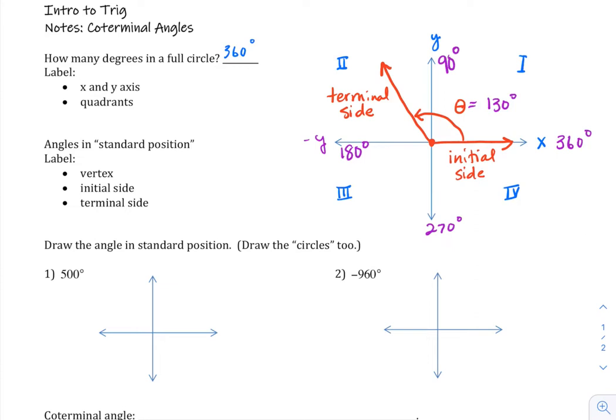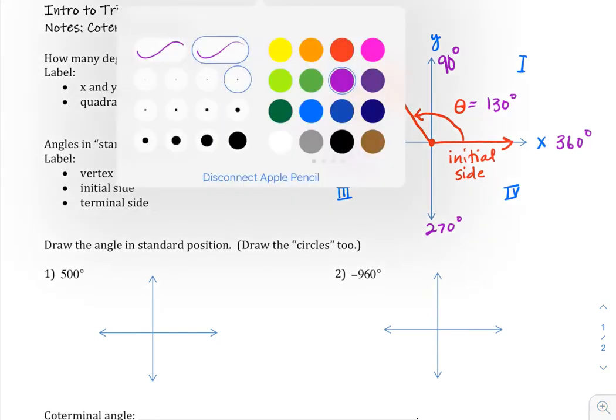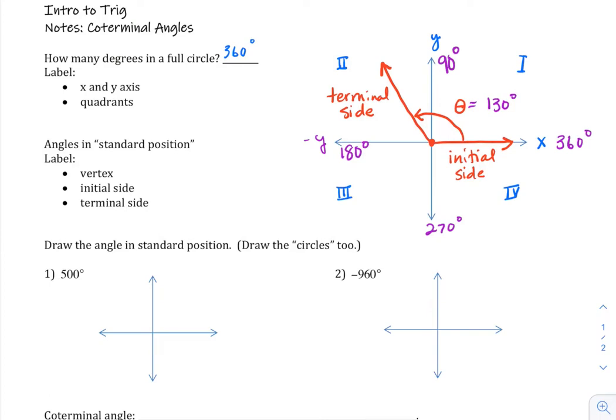So we can have positive angle measures, and we can also have negative angle measures. And you would still start at the initial side, but you would draw your angle clockwise. So positive is counterclockwise, negative is clockwise.